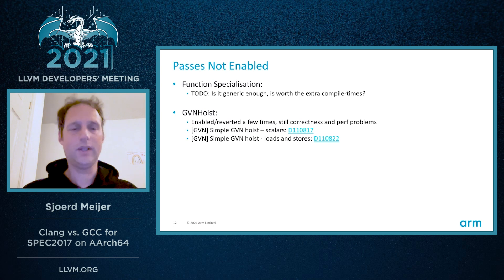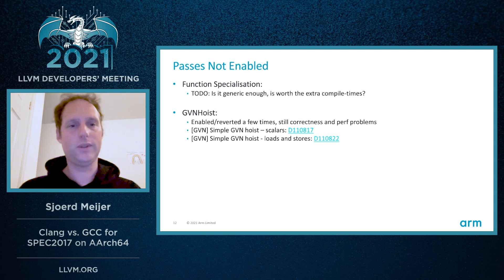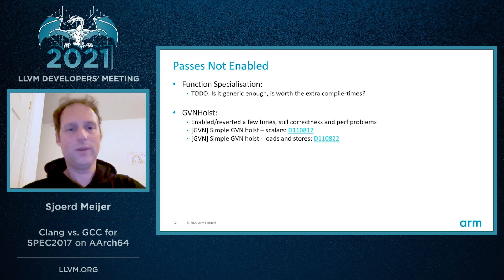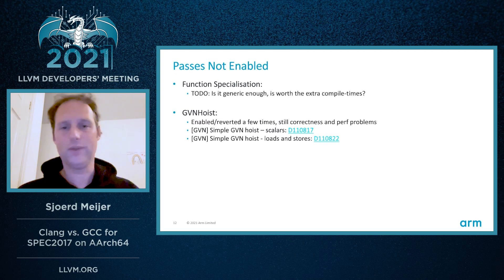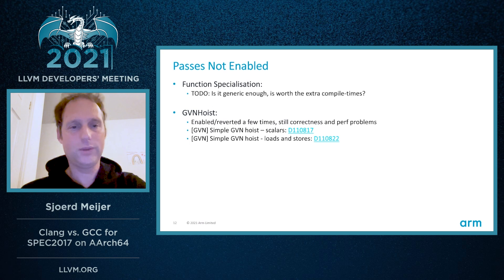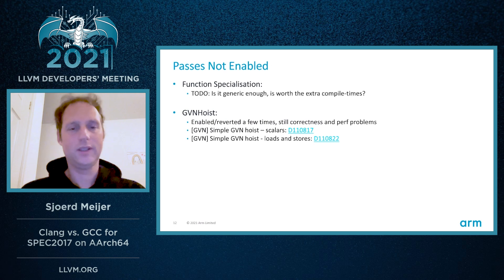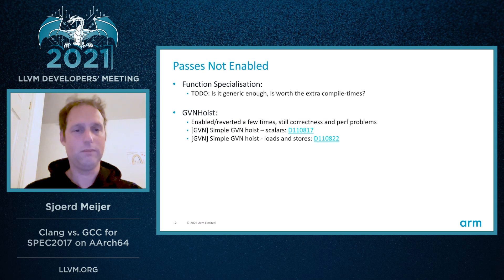We also have passes that are not enabled. Function specialization is a relatively new one, and we need to see if it's generic enough and worth the extra compile time. GVN hoist is a longer-standing problem — it has been committed, reverted, and recommitted quite a few times, and still has correctness issues and performance problems, but it is crucial for a couple of SPEC cases. My colleague Momchil is now working on this, creating simpler versions to hoist scalars, loads, and stores and making it part of GVN, and that seems to be going well.